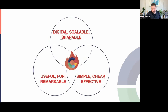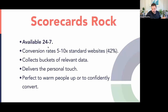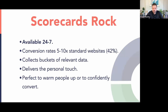Where we want to go is leads that come from digital assets that are scalable and shareable — something useful, fun, and remarkable that people love to share, and simple, cheap, and effective to use. Scorecards are available 24/7, convert at 5 to 10 times the standard website, and we recently crunched 1.5 million leads on the Score App platform. The average landing page conversion for scorecards was 42% — about 10 times better than any other landing page.